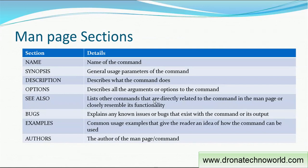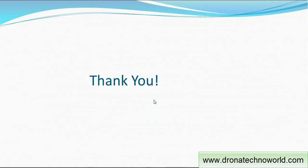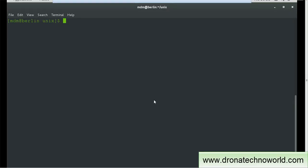If there are any bugs present in the given command, or the team might be working on those bugs, those are listed in the bugs section, which explains the known issues that exist with the current command. Sample examples are also mentioned in the examples section, and interestingly, the author details are also mentioned in the author section of the man page.